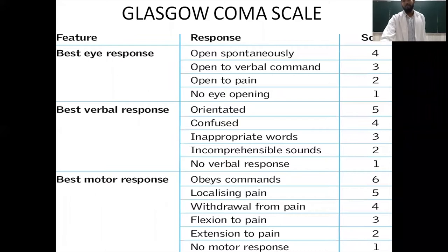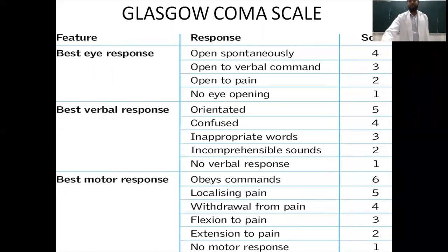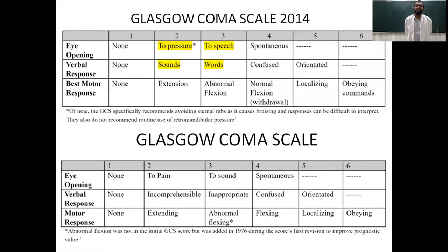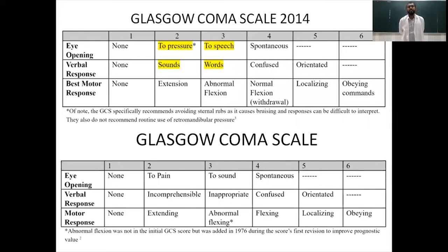There are certain problems with the Glasgow Coma Scale because it is no longer acceptable to clinically cause pain to the patient. So in 2014, there has been a revision. Previously, eye opening categories 2 and 3 were 'to pain' and 'to sound' — now changed to 'to pressure' and 'to speech.' In verbal response, 'incomprehensible' was changed to 'sounds' and 'inappropriate words' was changed to just 'words.'